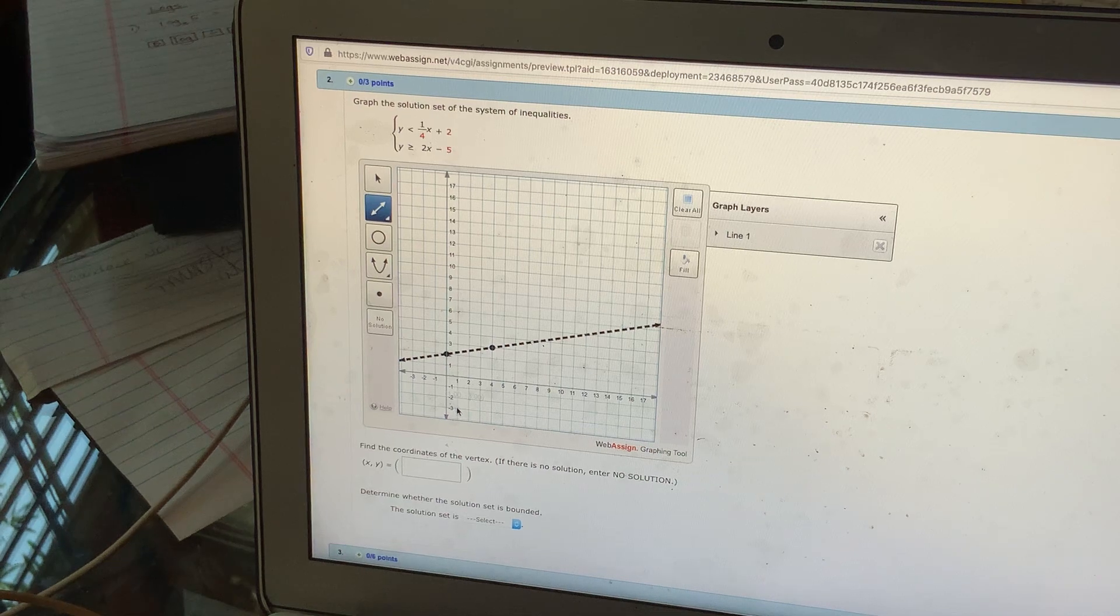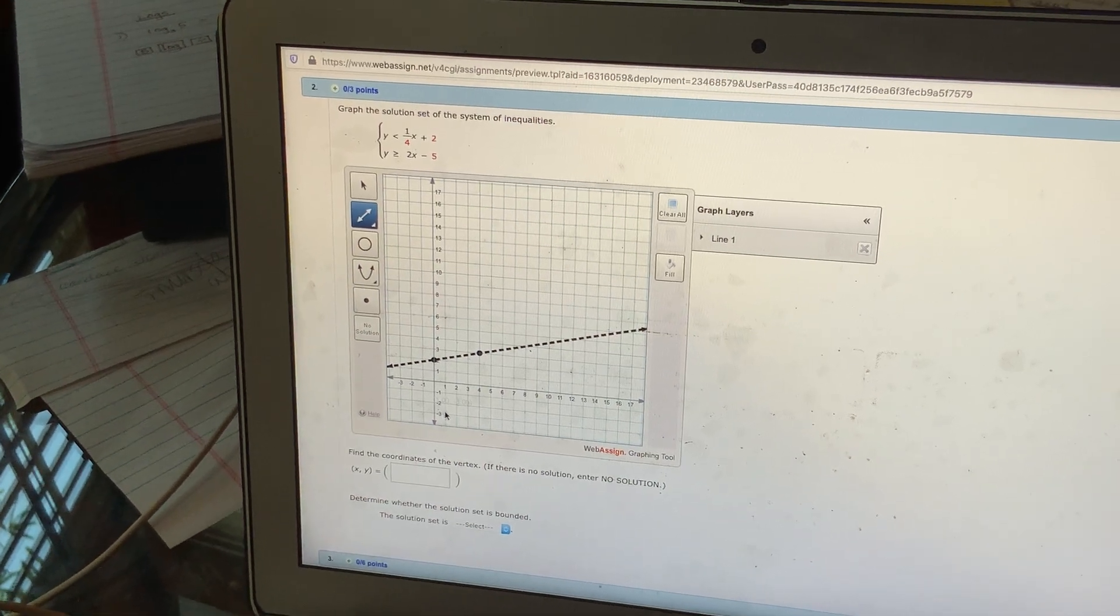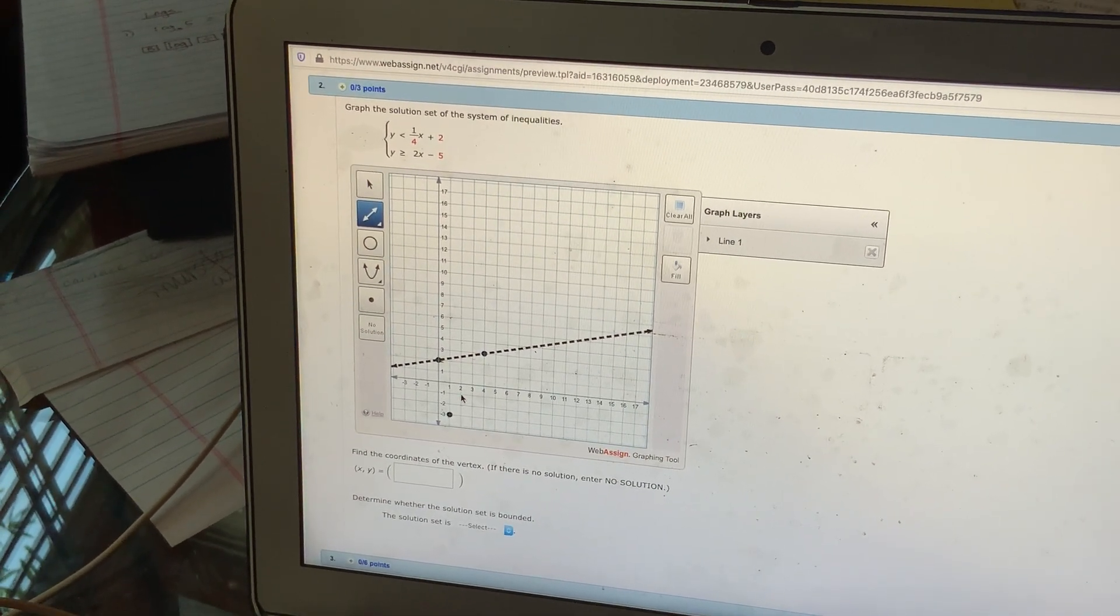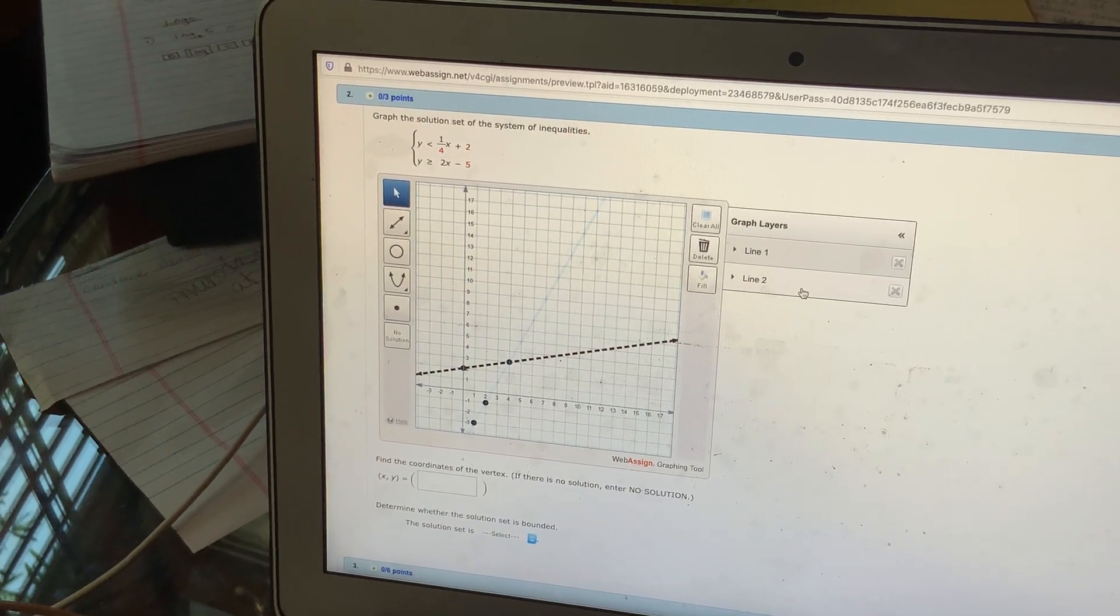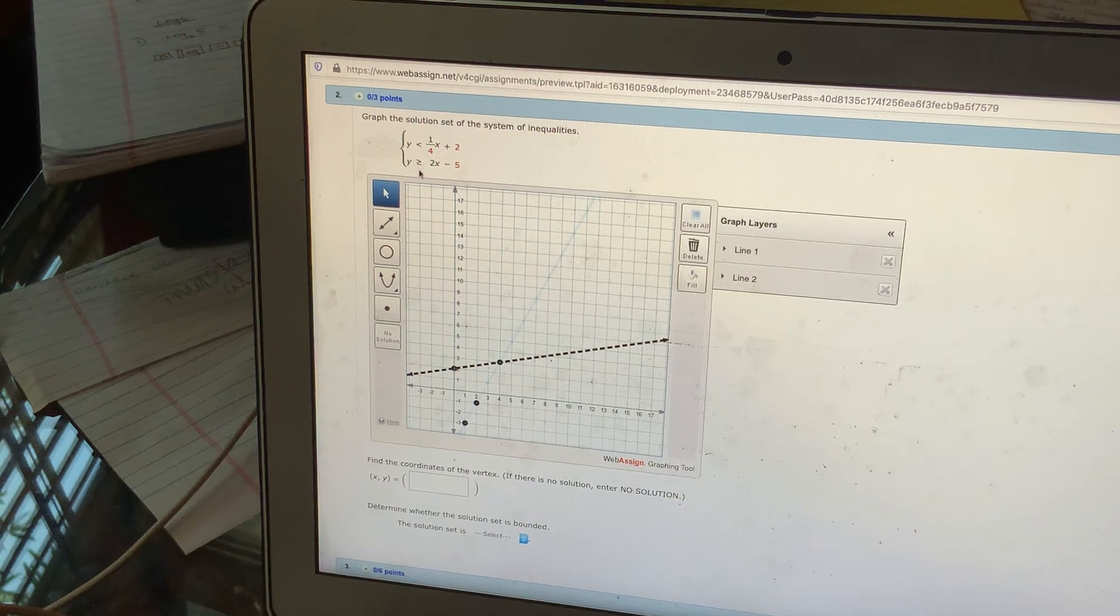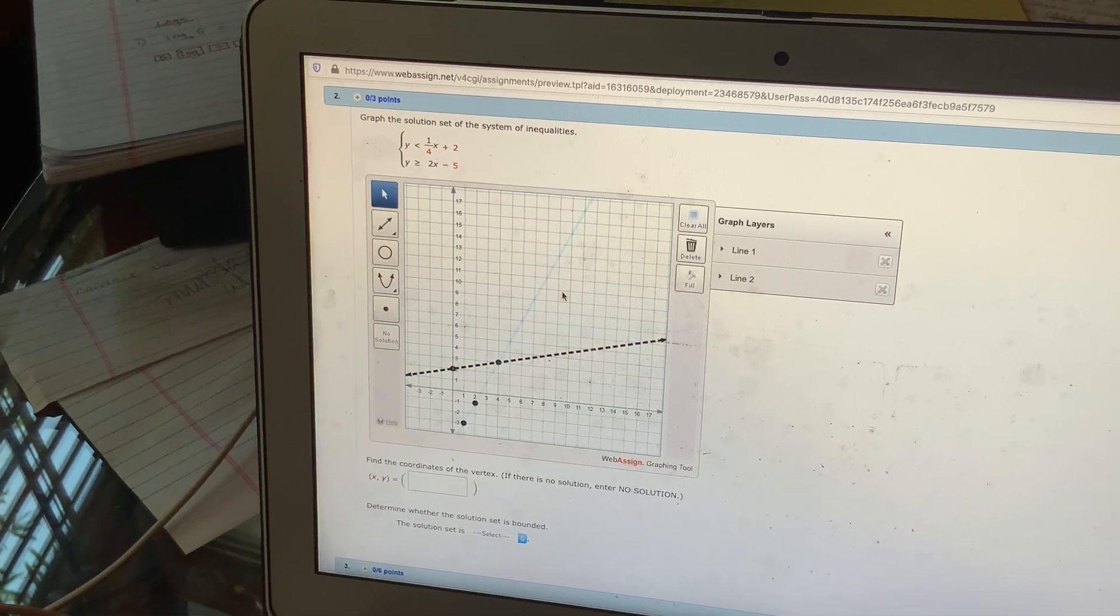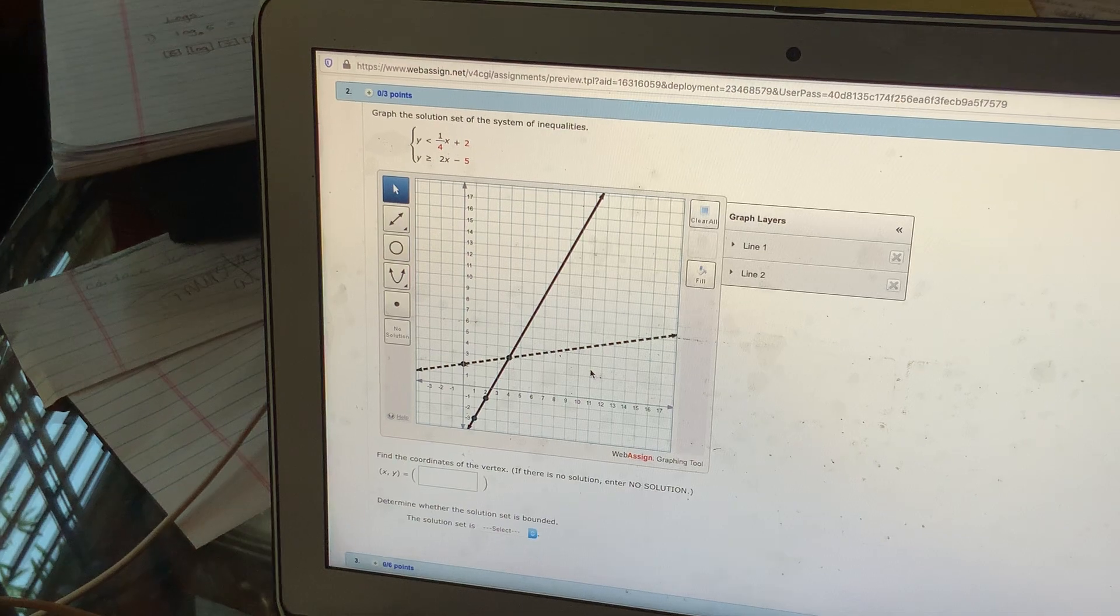And then I'm still going to use the fact that I know the slope is 2 over 1. So I'm going to go up 2 over 1. And now I've got that line. This line is solid because it's greater than or equal to. So I'm going to just click on that. So now I have my two lines.